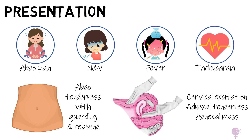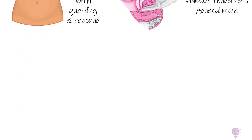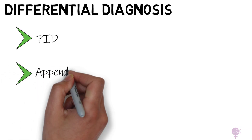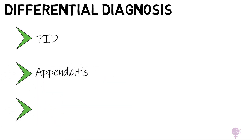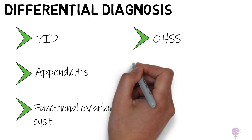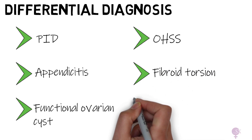These symptoms are pretty common in many other conditions, making the diagnosis of ovarian torsion a tricky one sometimes. Differential diagnoses to keep in mind include pelvic inflammatory disease (PID), appendicitis, a functional ovarian cyst such as a hemorrhagic cyst causing sudden onset pain, ovarian hyperstimulation syndrome (OHSS) in patients who have had ovulation induction as a form of fertility treatment, fibroid torsion, and renal colic.